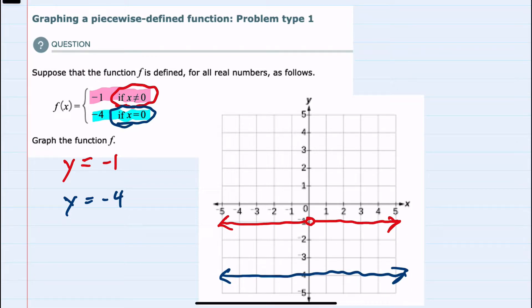So just equal to 0 would be this dot. So we have here f(x) equals negative 1 everywhere except 0, and f(x) equals negative 4 where x equals 0.